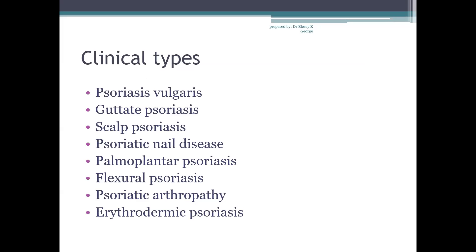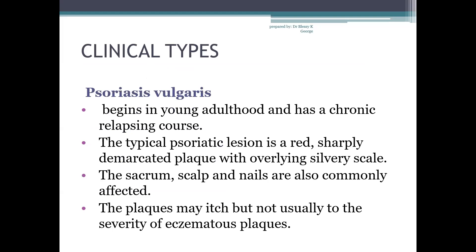Next are the clinical types of psoriasis. There are different types: psoriasis vulgaris, guttate psoriasis, scalp psoriasis, psoriatic nail disease, palmoplantar psoriasis, flexural psoriasis, psoriatic arthropathy, and erythrodermic psoriasis. Now let's see the characteristics of each type one by one.